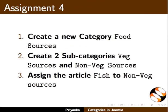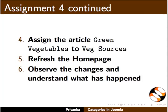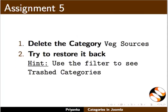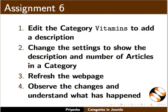Here is an assignment for you. Create a new category Food Sources. Create two subcategories, Wedge Sources and Non-Wedge Sources, under the category Food Sources. Assign the article Fish to Non-Wedge Sources and the article Green Vegetables to Wedge Sources. Refresh the homepage and observe the changes. Delete the category Wedge Sources and try to restore it back — hint: use the filter to see trashed categories. Edit the category Vitamins to add a description, change the settings to show the description and number of articles in a category, then refresh the homepage and observe the changes.